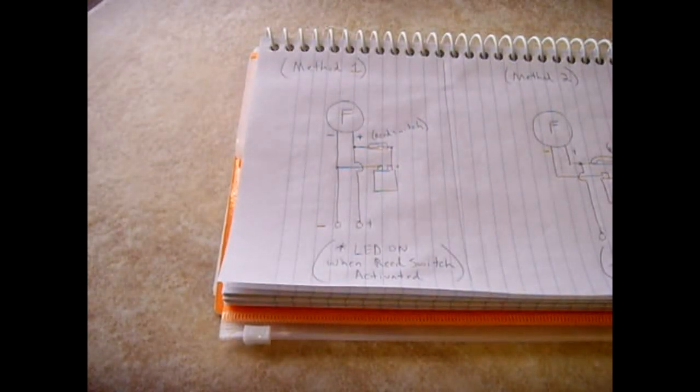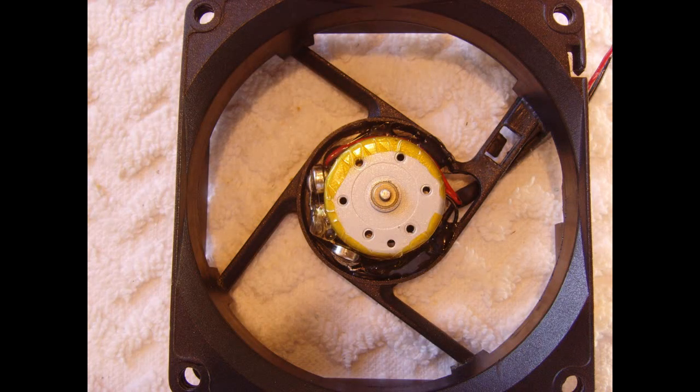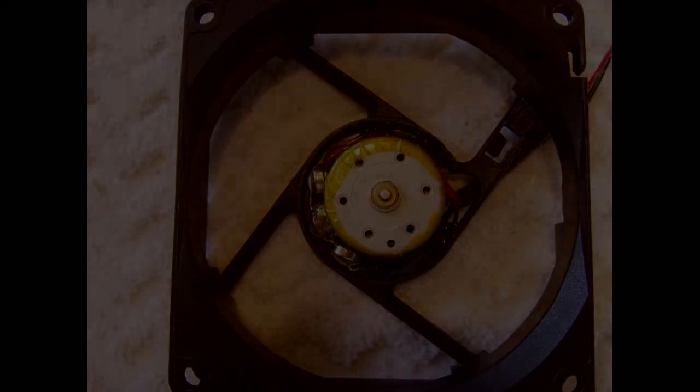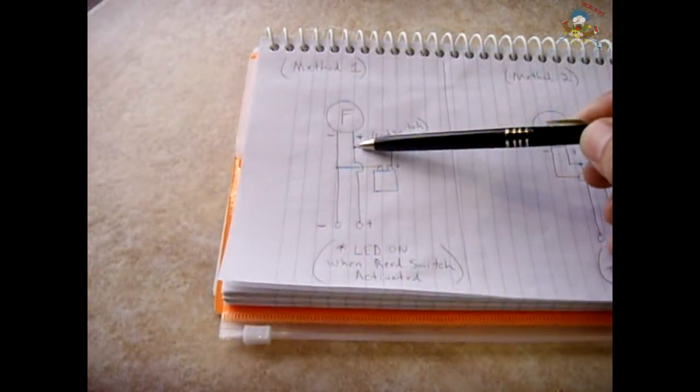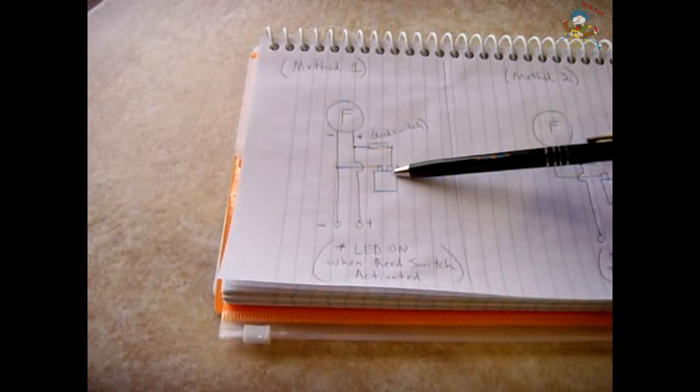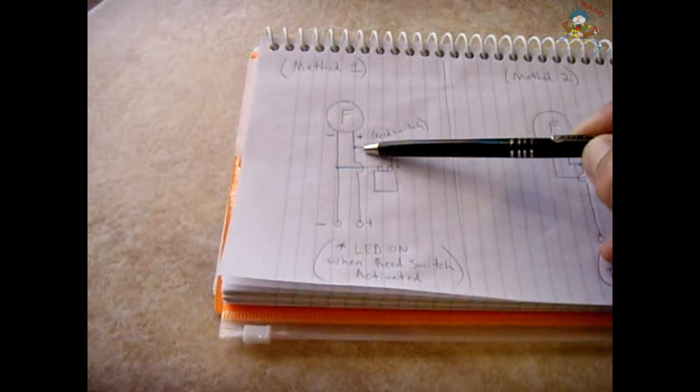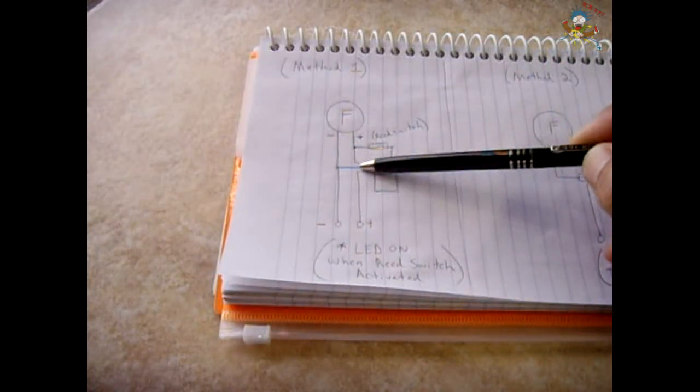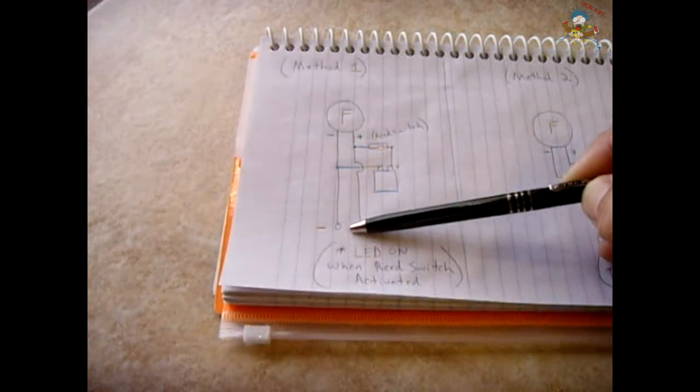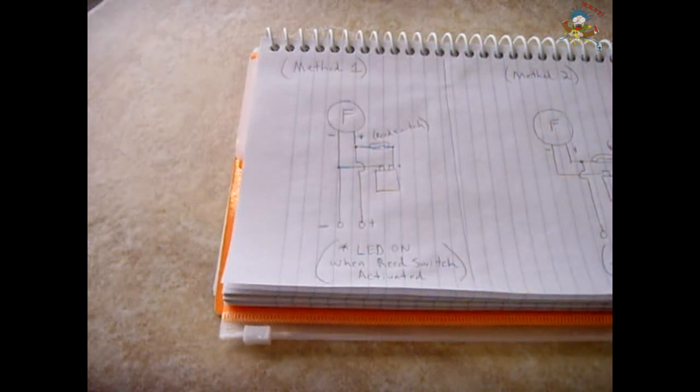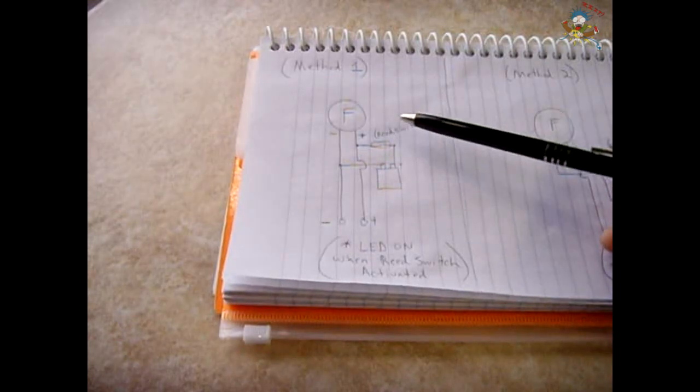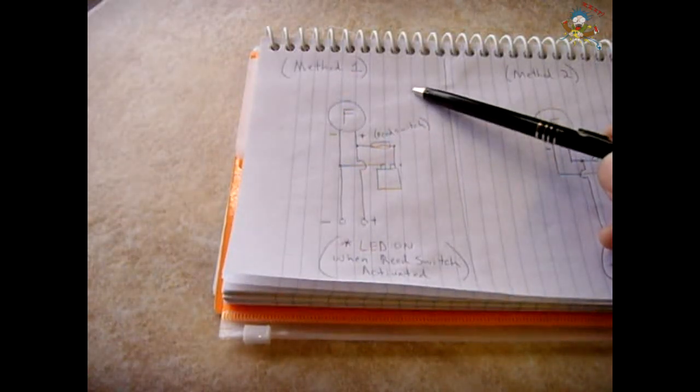Once that reed switch is connected to the positive, that goes to the positive of the internal hidden battery. What happens as the magnet is brought close to the fan, you're thinking that the magnet is repelling the other magnets, and that is not the case. What is happening, as the magnet is brought close, it's triggering the reed switch.